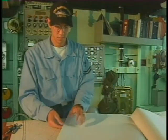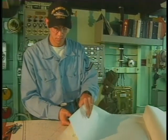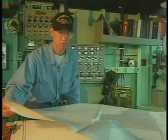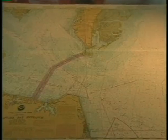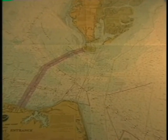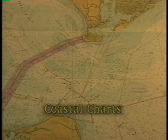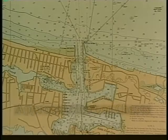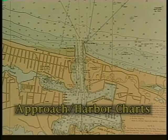Navigational charts contain a wealth of useful information for boat coxswains as well as navigators. Individuals acting as navigators or boat coxswains may use one of three types of charts: coastal charts, sailing charts, and approach harbor charts.